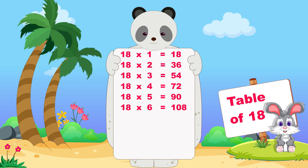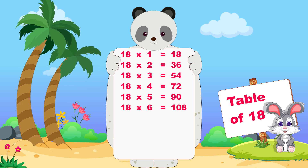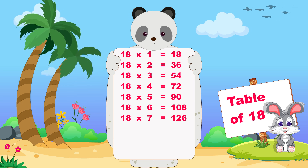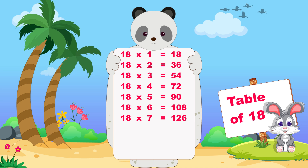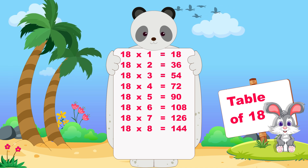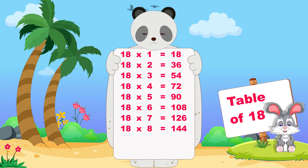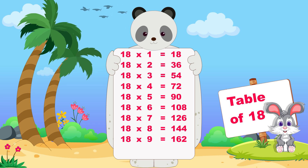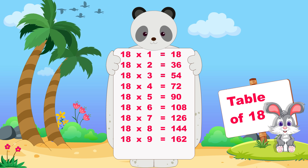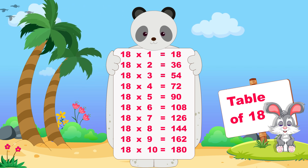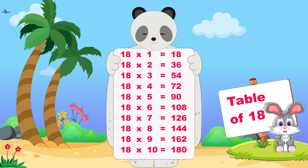Eighteen sixes are one hundred eight, eighteen sevens are one hundred twenty-six, eighteen eights are one hundred forty-four, eighteen nines are one hundred sixty-two, eighteen tens are one hundred eighty.